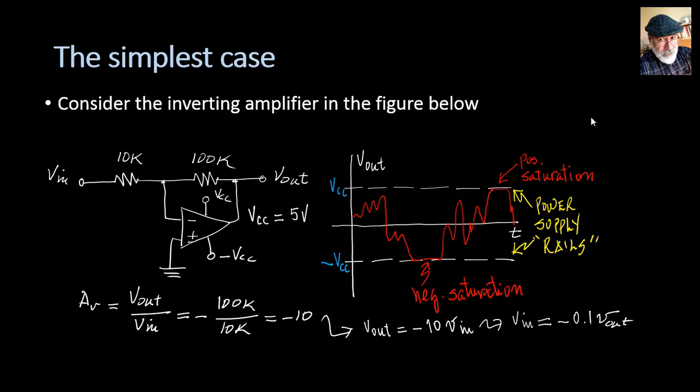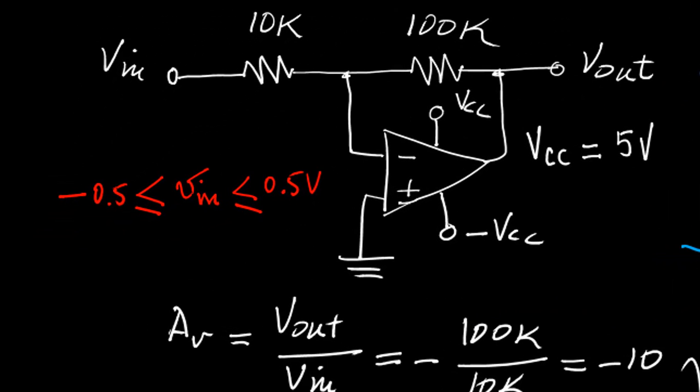And the input would be Vin positive 0.5 volts. That is the maximum input voltage that will not saturate the op-amp. A similar analysis on the other rail tells us that the input voltage must stay above negative 0.5 volts.